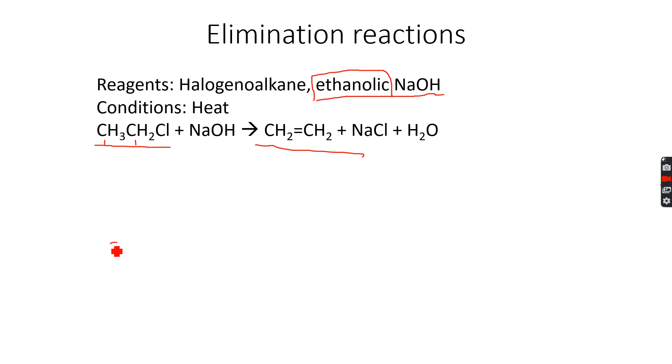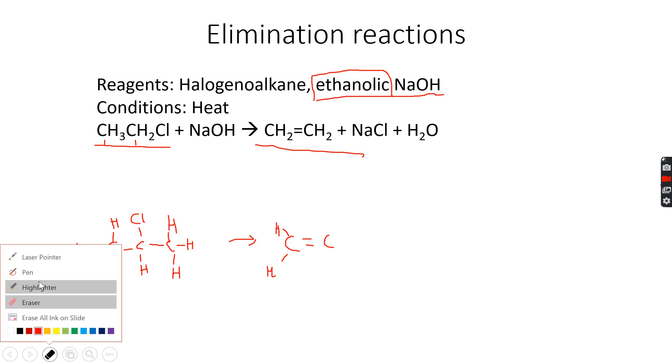So let's say we have 2-chloropropane. 2-chloropropane will be where the chlorine atom is attached to the second carbon atom in propane. So this is 2-chloropropane. Now, if elimination takes place, we get this, because the chlorine is eliminated and a hydrogen from the adjacent carbon atom.